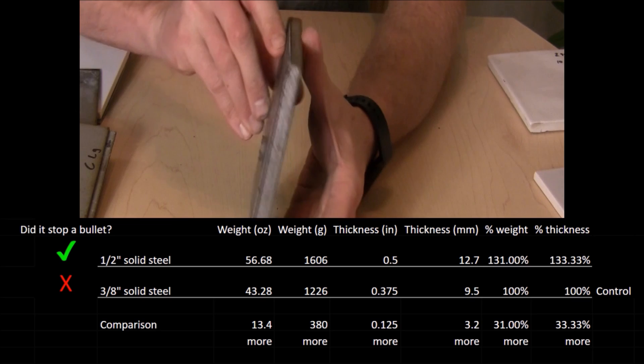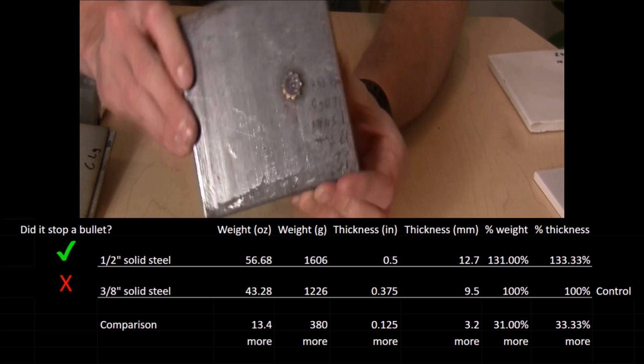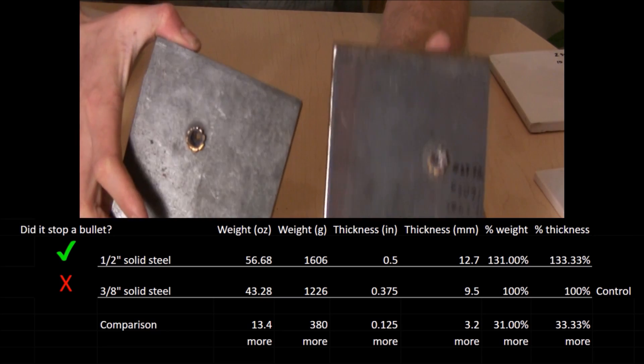The 3/8 inch thick solid steel control plate was totally penetrated by the 5.56 round that we were shooting. The 1/2 inch thick solid steel plate provided adequate protection that was far heavier than any of the other targets, and heavier than the control by 31%.